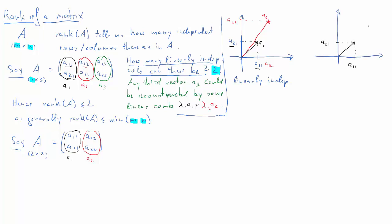How would our image look if we had linearly dependent vectors? Here would again be our black vector A1, and the red vector A2 would look like this — it lies exactly on top of vector A1. A2 is somewhat longer, but that doesn't matter in this context. So these two are linearly dependent.